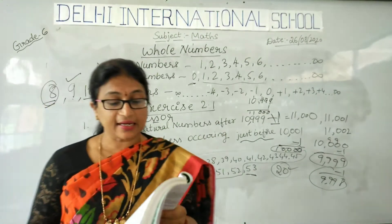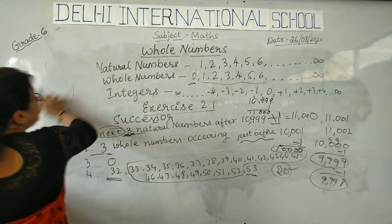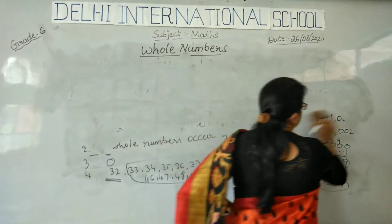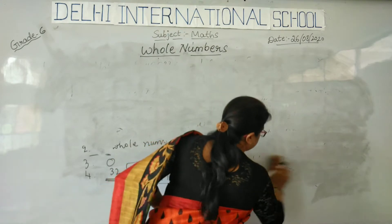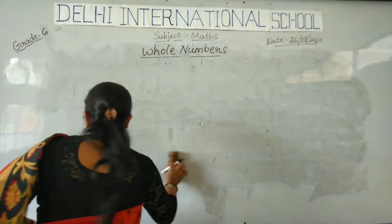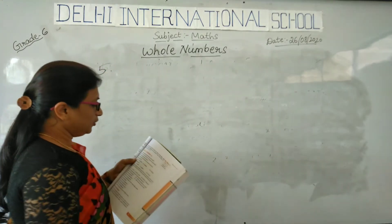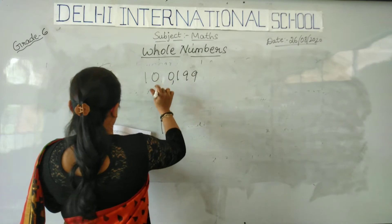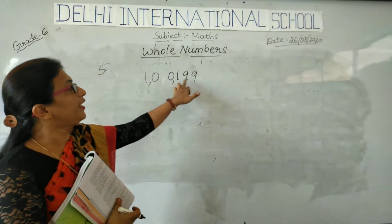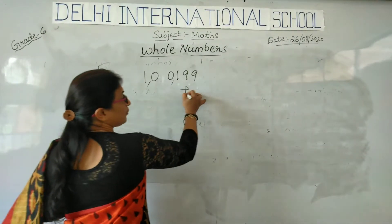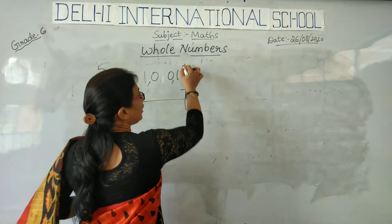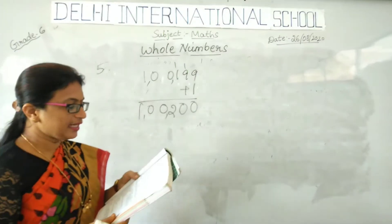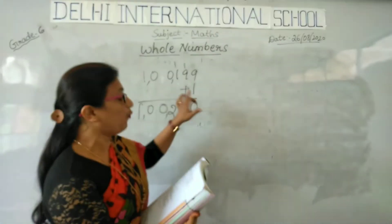The next problem says: write the successor. They have asked for the successor, so I have to do plus 1. By adding 1 to the given numbers, you get the successors. To find the successor, you have to add 1 to all the problems.